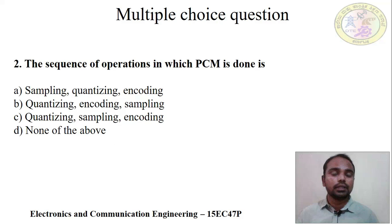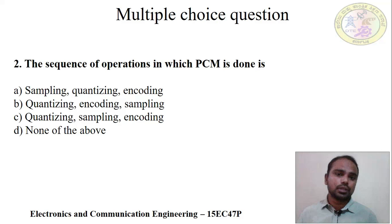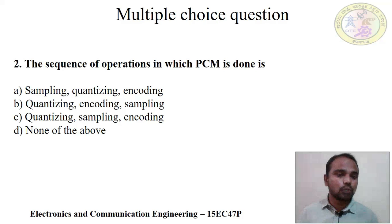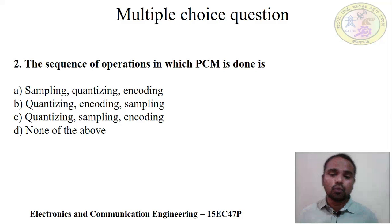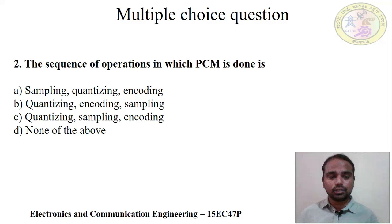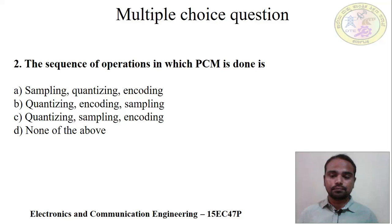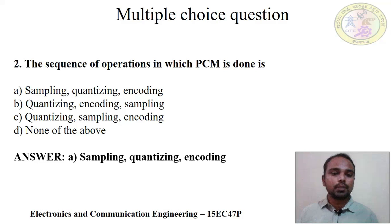Question 2: What is the sequence of operations in which PCM is performed? Options are: A) Sampling, quantizing, encoding; B) Quantizing and coding, sampling; C) Quantizing, sampling, encoding; D) None of the above. The correct answer is A — sampling, quantizing, and encoding. In PCM modulation, first we perform sampling, then quantizing, and finally encoding.